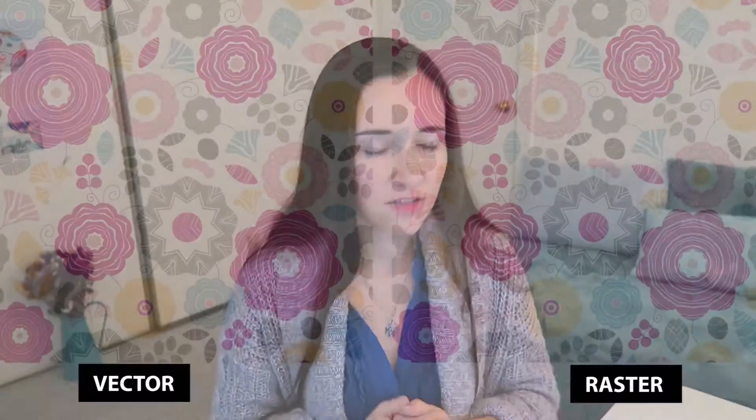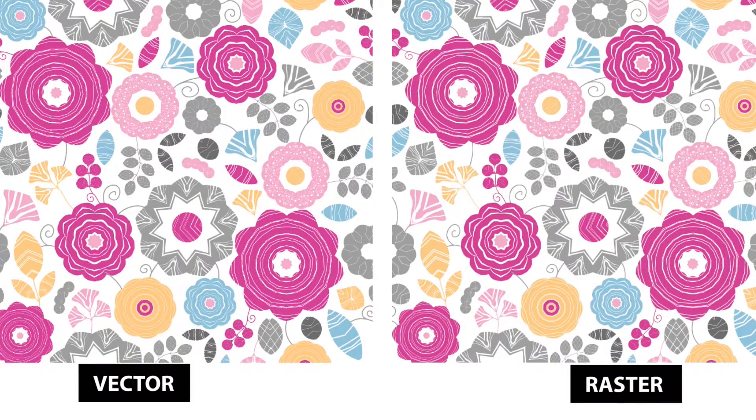The vector format, if opened in appropriate software, can be scaled to basically fill out the whole screen without losing any quality and sharpness. The raster format, on the other hand, will become pixelated. I'm going to show you an example of the difference between raster and vector graphics. Here I have two of the same image — a pattern repeat I created in Adobe Illustrator.